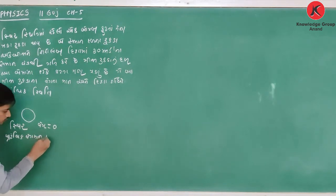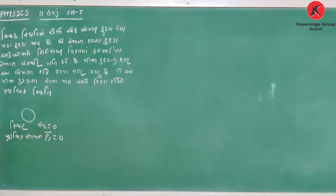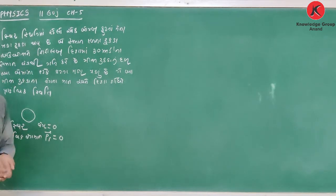Bhwagman Pi is equal to ke lata. Pararum Bhwagman Pi is equal to collapse.